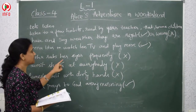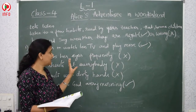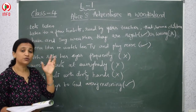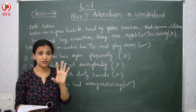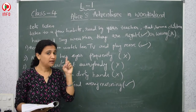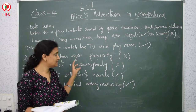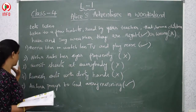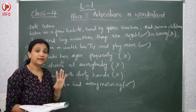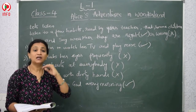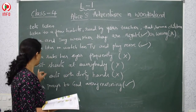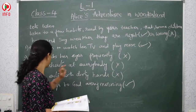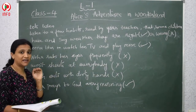Next: Neha rubs her eyes frequently. Rubbing eyes frequently is wrong because when you rub your eyes you use your hands, and hands have germs. Without washing, if you rub your eyes, germs will affect them — so this is a wrong habit. Next: Make shouts at everybody. Shouting is very bad; we should not talk in a loud voice. So this is not a good habit. Soft speaking is a good habit.